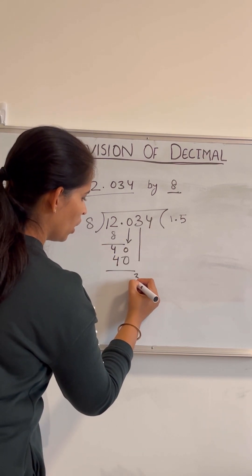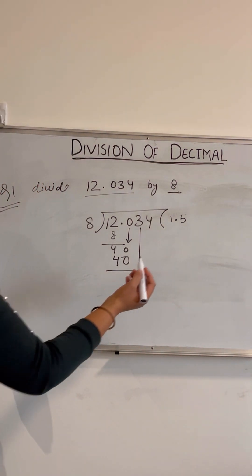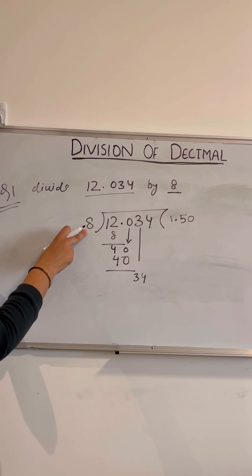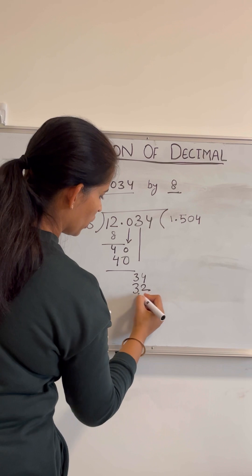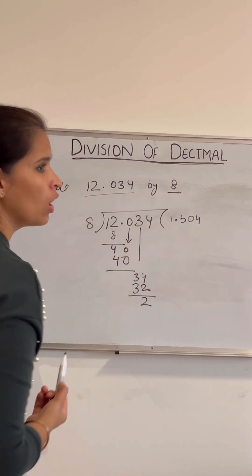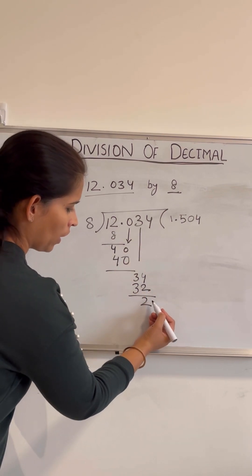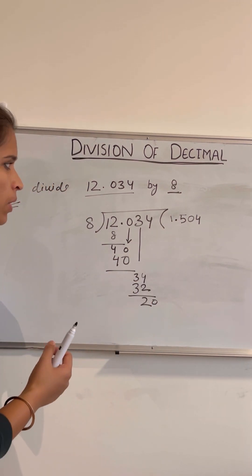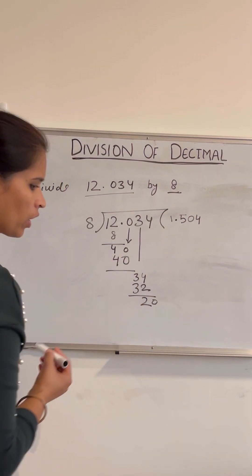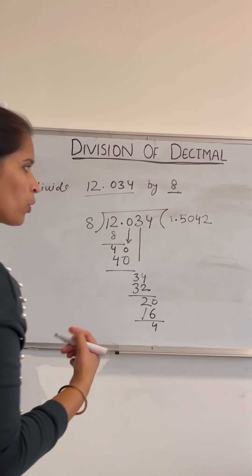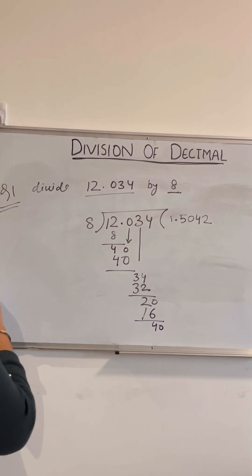We drop the next number to get 40. 8 fives are 40, so that gives us 5. Next we drop 3; since 3 is not divisible by 8, we drop the next digit 4 to get 34. 8 fours are 32, remainder 2. Since we already have a decimal in the quotient, we can add a zero and bring it down: 20. 8 twos are 16, remainder 4. We add another zero: 40. 8 fives are 40, remainder zero.